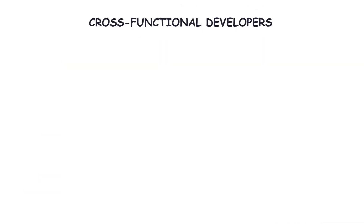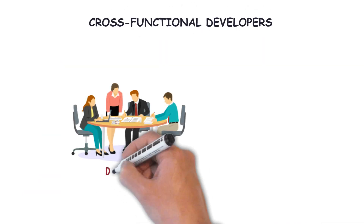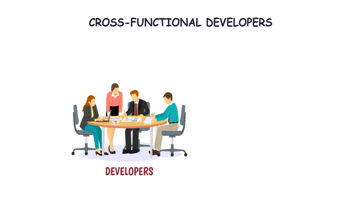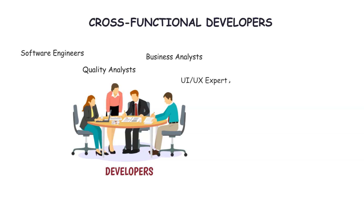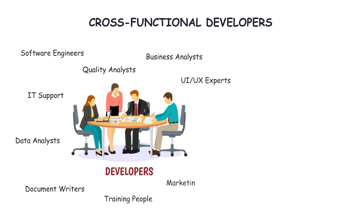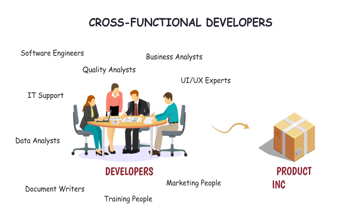Cross-functional developers — developers are product developers, something like a project team. A team is a team when we have the right combination of people to win together. For example, we need software engineers, quality analysts, business analysts, UI/UX experts, IT support, and data analysts while developing a software product. We may also need document writers, training, and marketing people to release a product increment. Developers are the Scrum team people committed to creating any aspect of a usable increment each sprint.